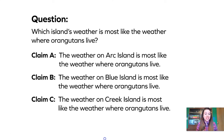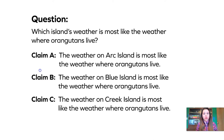The Wildlife Protection Organization has sent us these three claims and they want us to argue which claim is the best. Let's read them together. Claim A: the weather on Arc Island is most like the weather where orangutans live. Claim B: the weather on Blue Island is most like the weather where orangutans live. And Claim C: the weather on Creek Island is most like the weather where orangutans live.